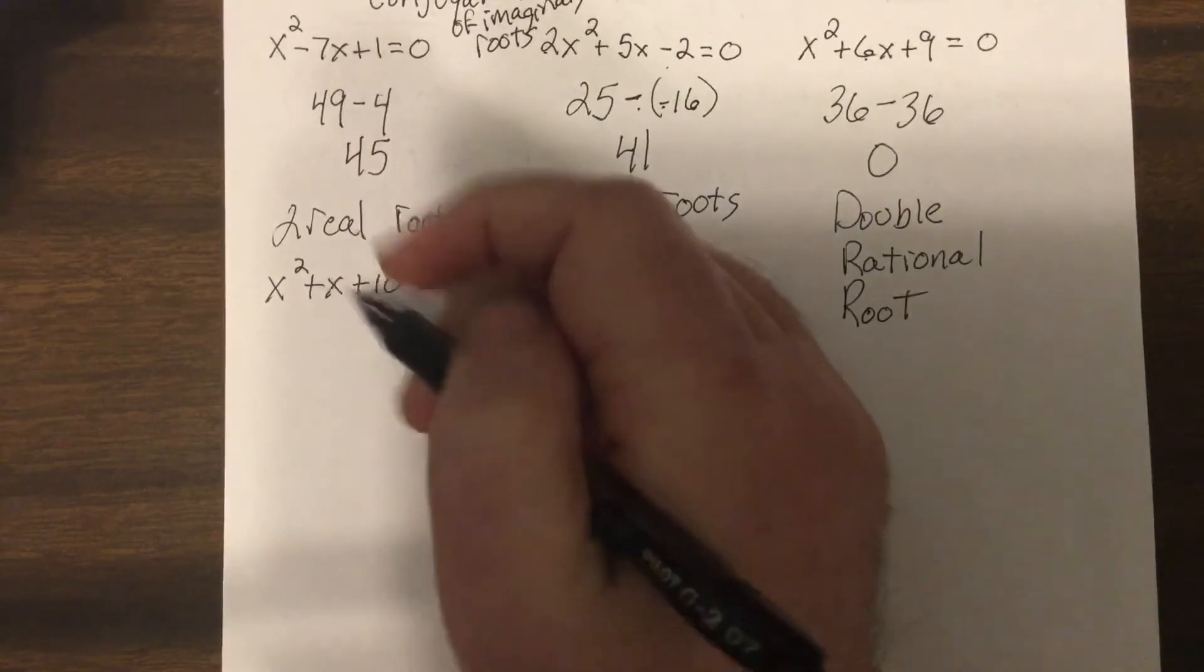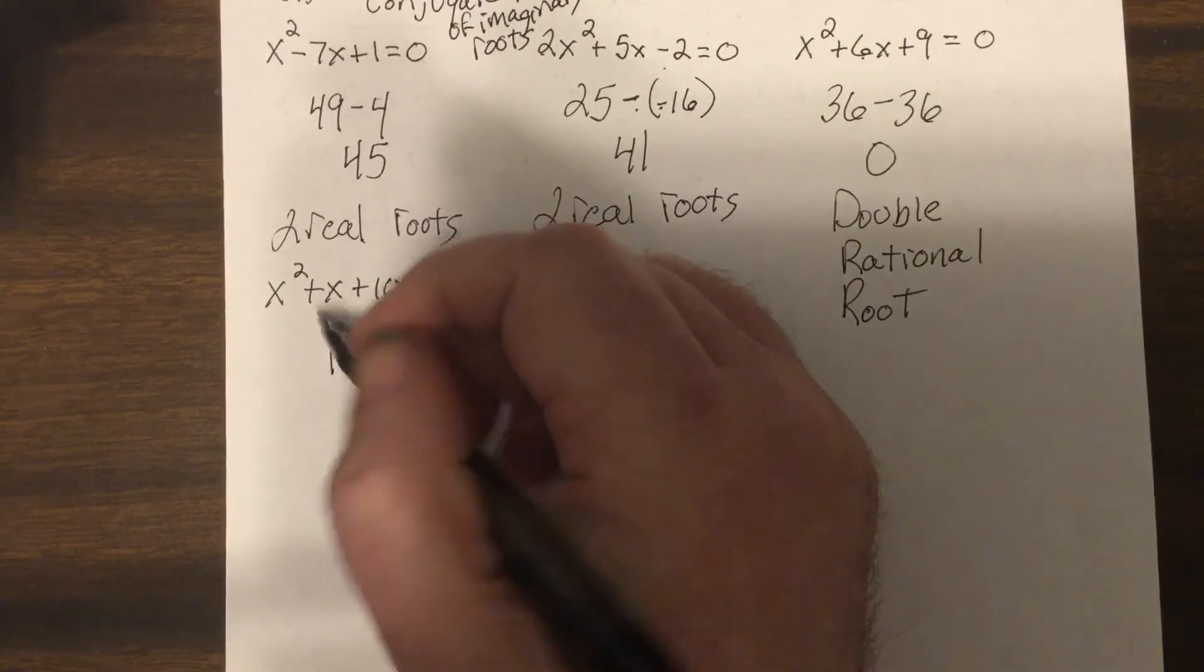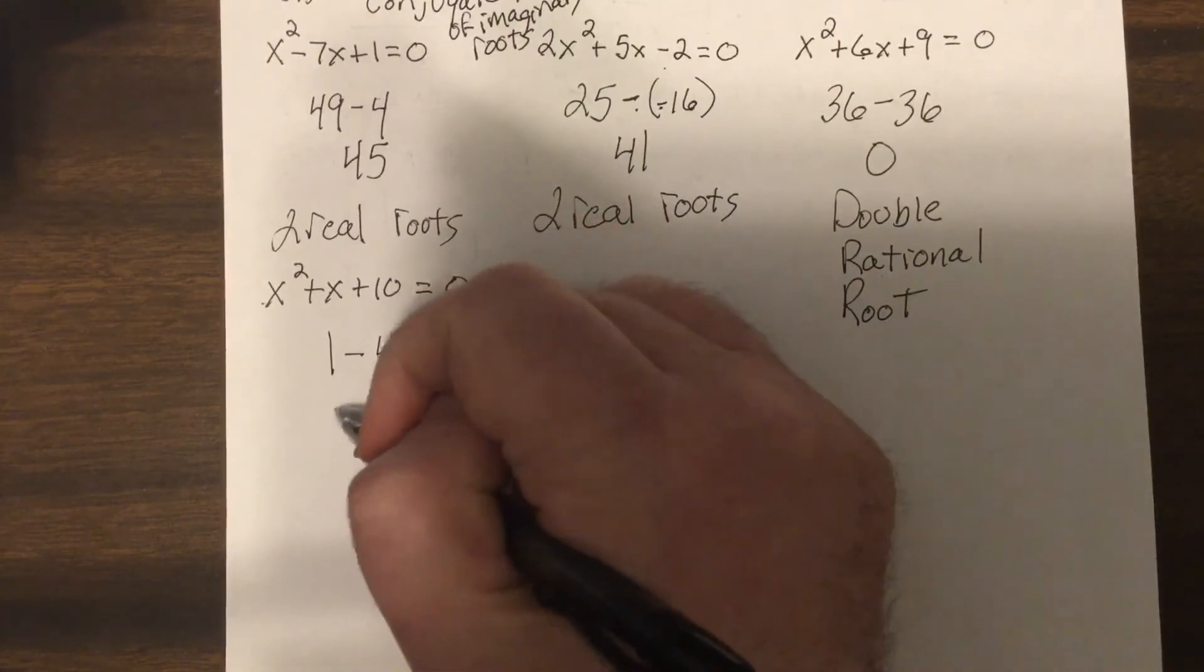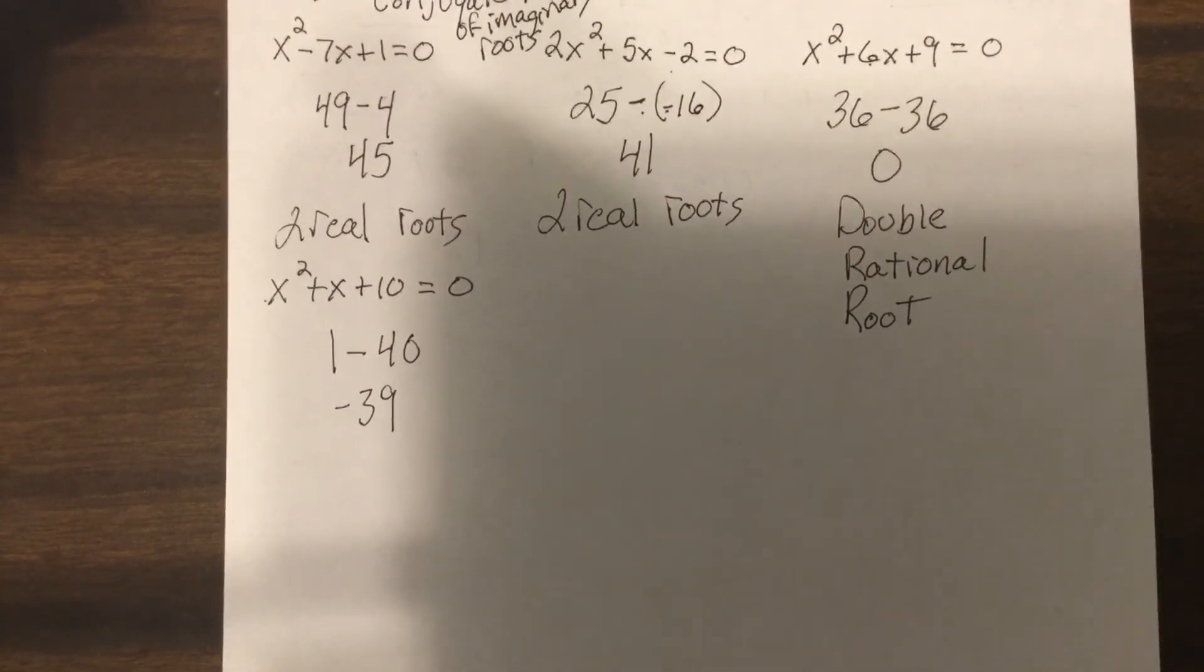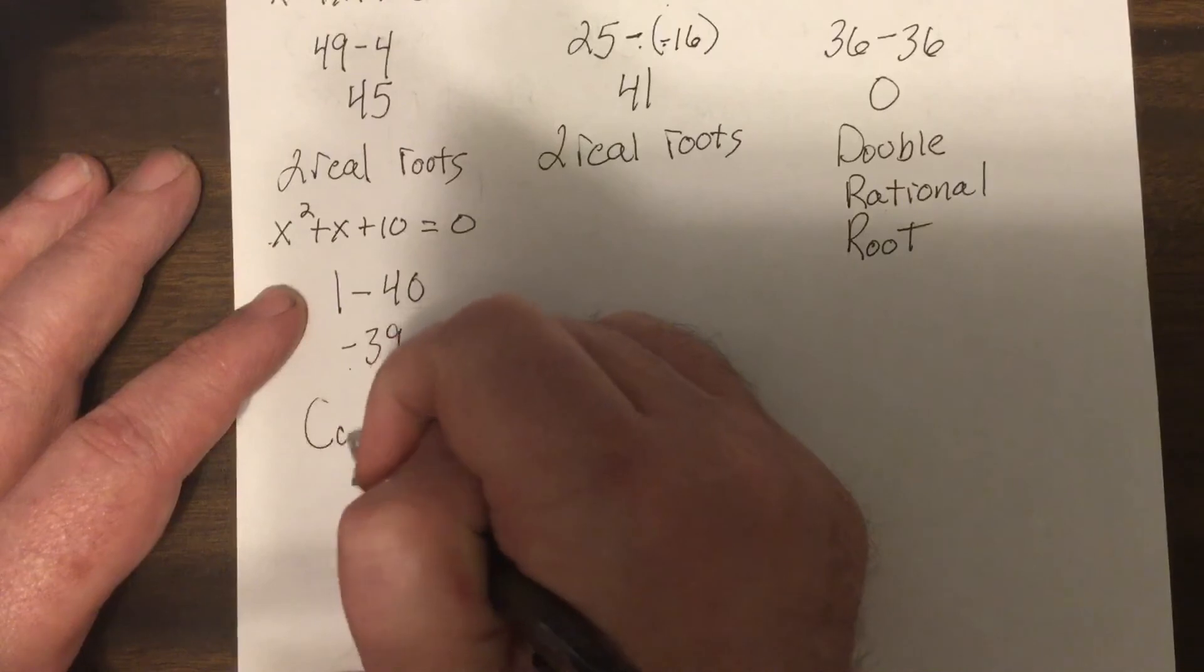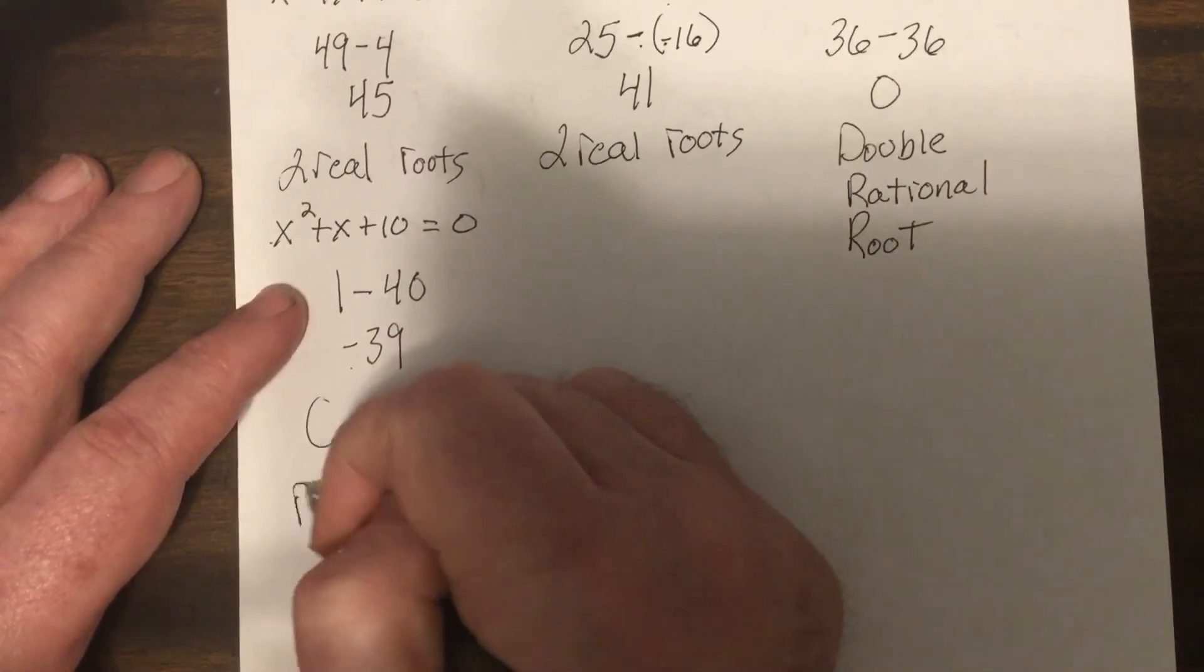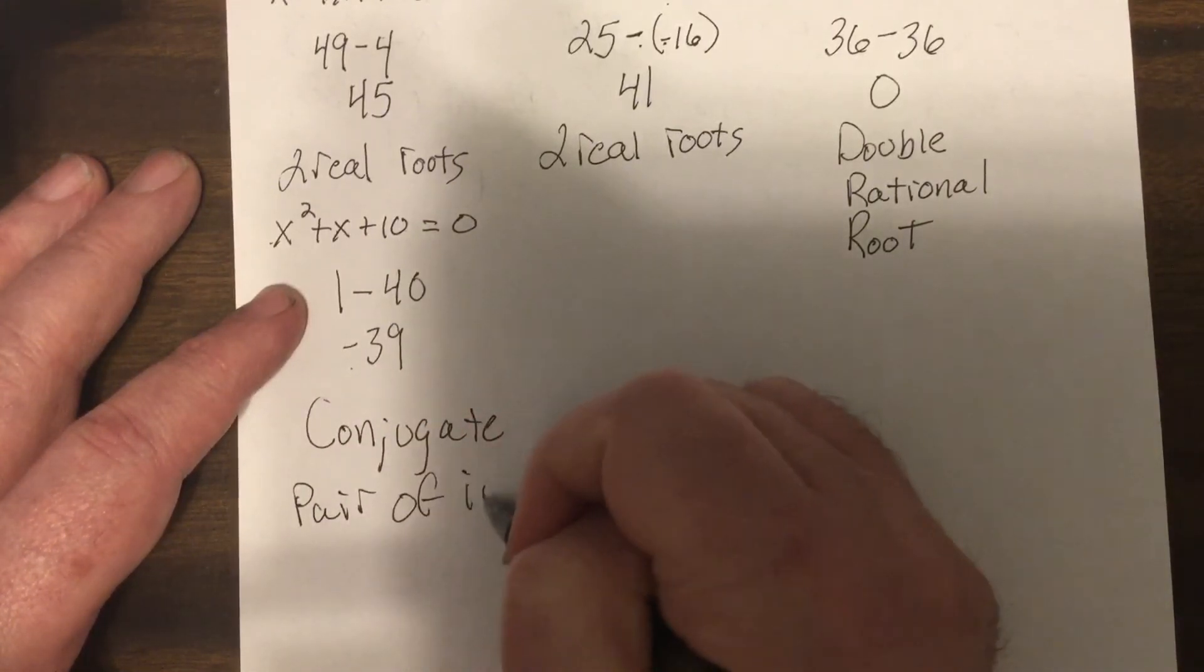Then the last one, b is 1, so b squared is 1, minus 4, a is 1, c is 10, so that would be 40, which is negative 39. Now again, the number itself is not that important, it's is it positive, is it zero, or is it negative? And that's negative. So it'd be a conjugate pair of imaginary roots.